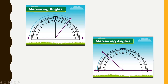In this next example, we are also measuring towards the left side, so we take the outer scale because 0 is on the outer scale: 0, 10, 20, 30, 40, 41, 42, 43, 44, 45 — the measure of this angle is 45 degrees.